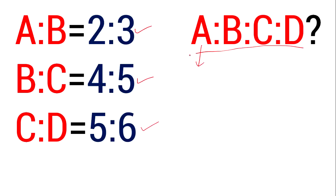The value here is 2, 4, 5. On the left hand side, the value is 2, 4, 5. We multiply the values — 2, 4, 5 and 5.